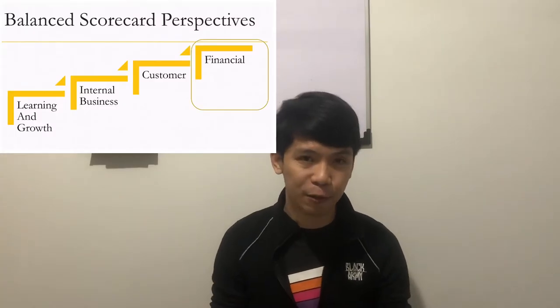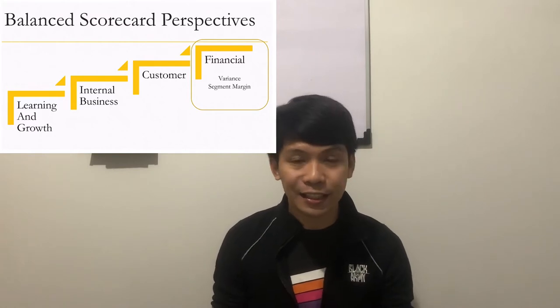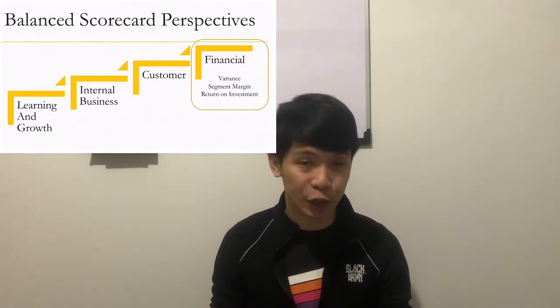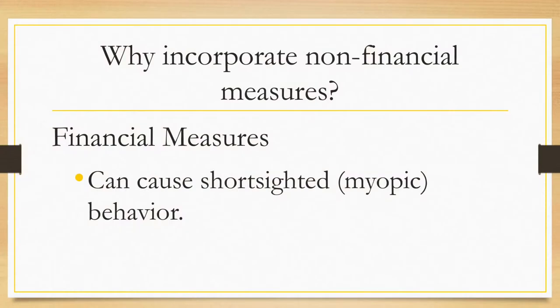But why bother talking about non-financial performance measures? Financial performance evaluation measures may include variances, segment margin, and return on investment. Why won't we just focus on these? To give you the short answer, we would incorporate non-financial measures in addition to financial measures because financial measures can cause short-sighted or myopic behavior.